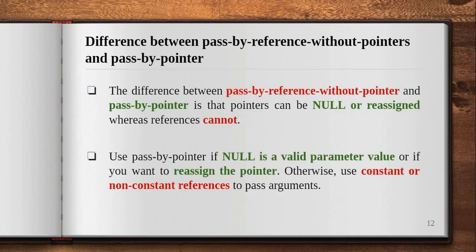Let's see the difference between pass by reference without pointers and pass by pointer. Pointers can be null or reassigned, whereas references cannot. So if we have pointers, they can be null and reassigned, whereas a reference cannot be reassigned or null. Use pass by pointer if null is a valid parameter value or if you want to reassign the pointer; otherwise use constant or non-constant references to pass arguments.